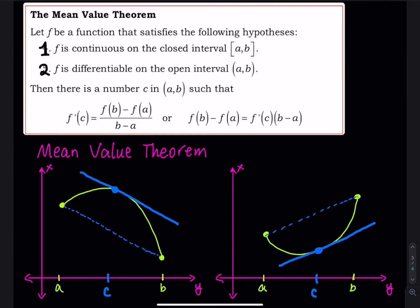In our first picture, f(a) and f(b) are no longer the same, so a and b are at different heights from the x-axis. We have two points a and b with a curve between them. Even though the function is a curve, I can still draw a straight line — the blue dashed line — to connect a and b.